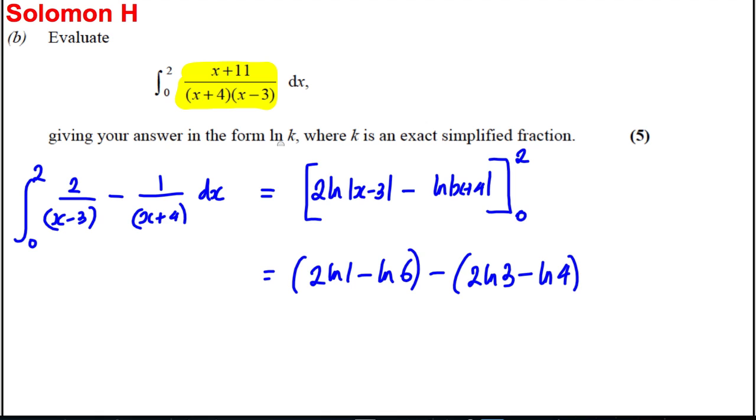And ln(1) is 0, so there's nothing there. So we're going to get ourselves the answer here, negative ln(6) subtract 2 ln(3) plus ln(4).